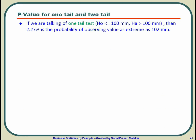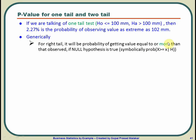Now, if we are talking of a one-tail test, where H0 is less than or equal to 100 mm and H-alternative is greater than 100 mm, then 2.27% is the probability of observing a value as extreme as 102, because you are bothered with just one tail. Generically, if you are talking of the right-tail null hypothesis, it will be the probability of getting a value equal to or more than that observed — so if you got 102, it will be the probability of getting 102 or more.